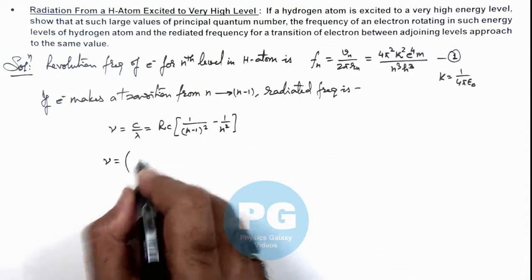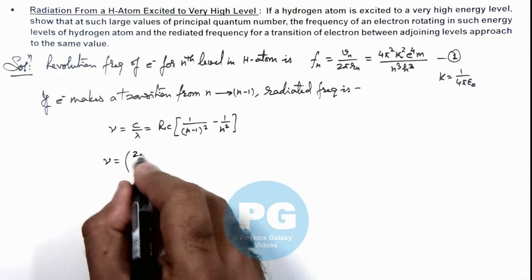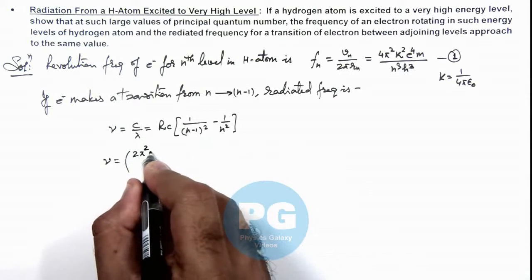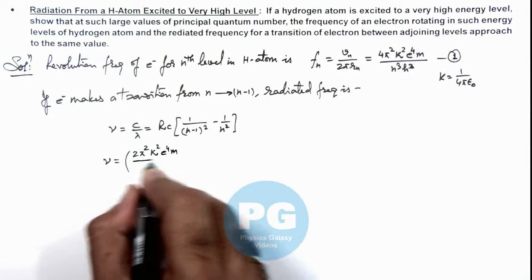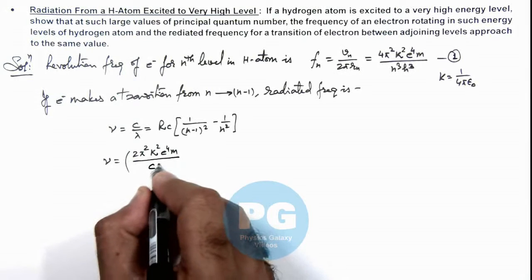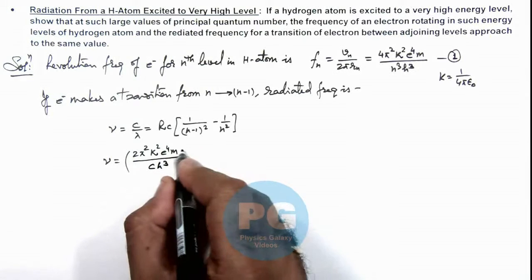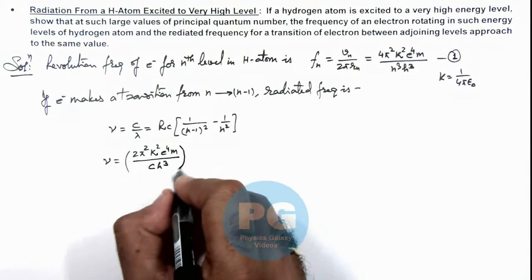We can use ν equals 2π²k²e⁴m by h³ multiplied by (2n-1) divided by n⁴.